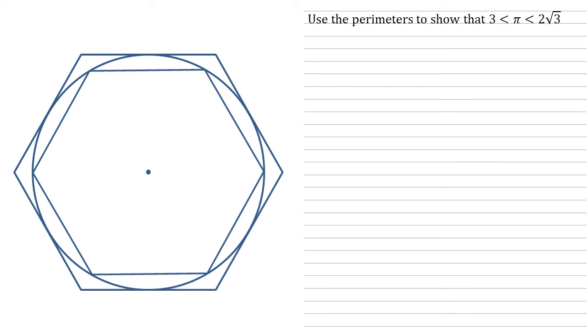And using this diagram and the perimeters of the hexagons, we are going to show that pi is between 3 and 2 root 3. We can see quite quickly that the perimeter of the circle must lie in between the perimeters of the two hexagons.